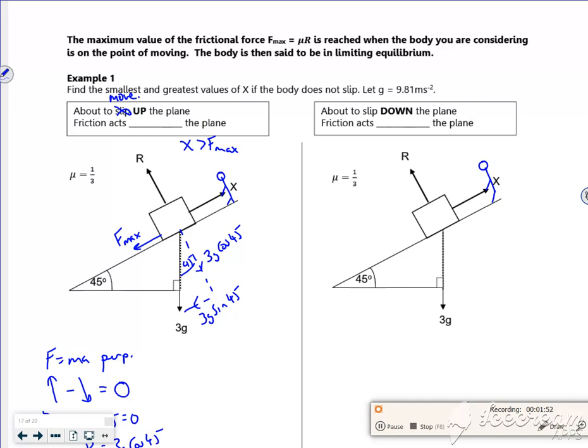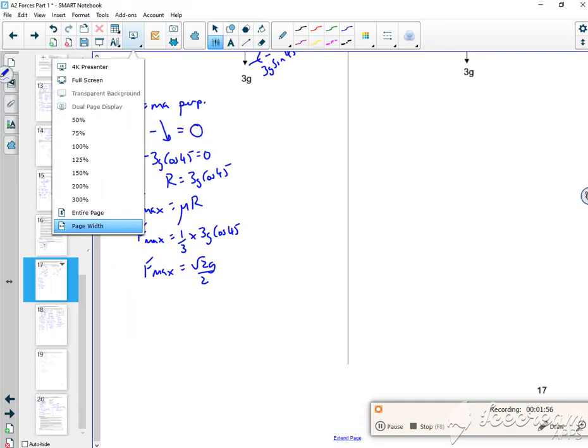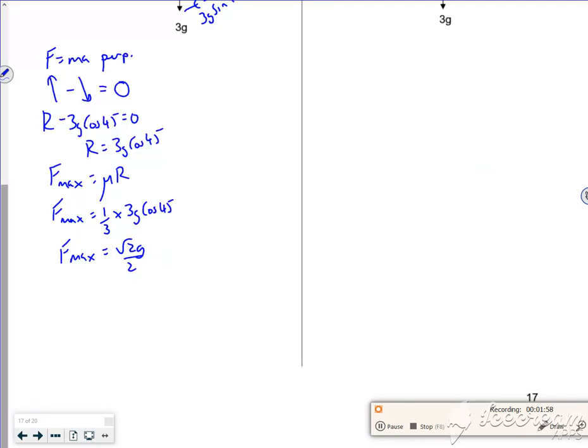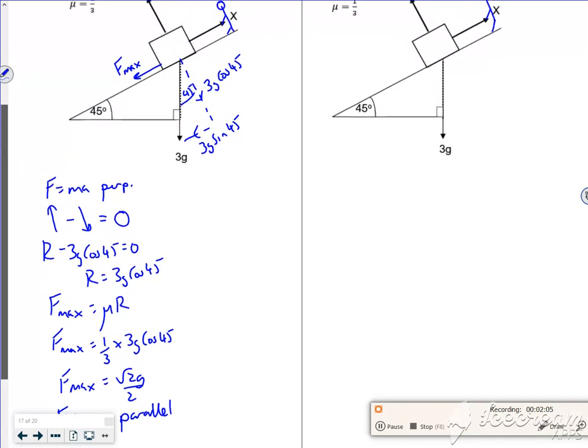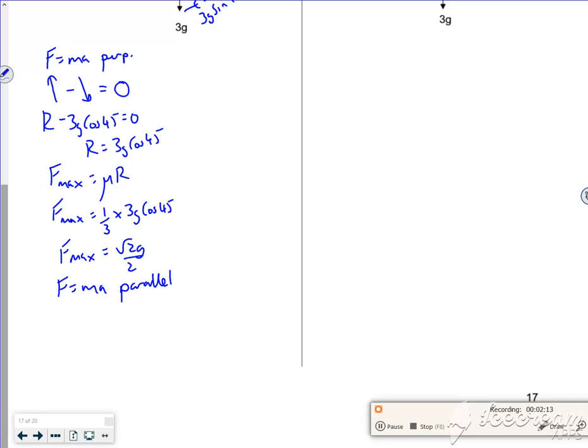So then, oh, what is he doing? It's a good job, really wasting time here with it. Right, so if I do F equals ma parallel to the slope now. So it's being about to pull it up, aren't I? That's the way it's going. My acceleration is going up, but I'm going to work it out as if it's right on that edge. So I'm going to say that going up minus going down is equal to zero.